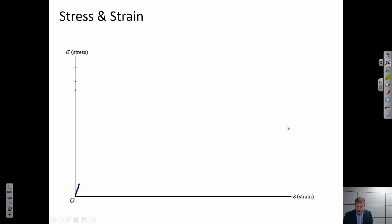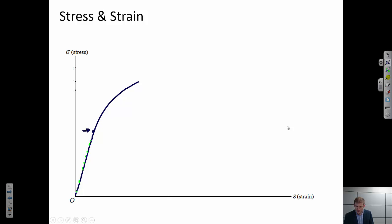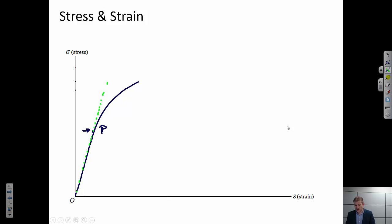There are a couple of terminology points I want you to be familiar with. I'm going to draw a representative stress-strain diagram. I can see it looks pretty linear in here, but it starts to deviate from linearity about this point. This is called the proportional limit — the point at which we're no longer proportional and are deviating from linearity. If I extend that line, it would look something like that.